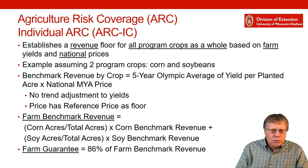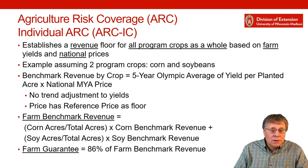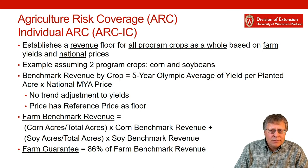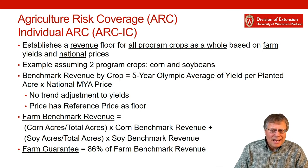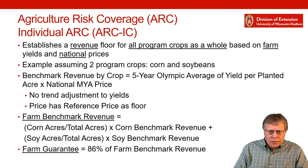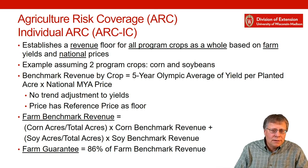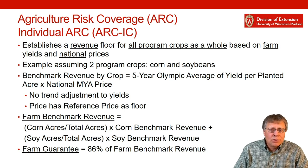To get your farm benchmark, you calculate an individual farm benchmark for each crop. It's the five-year Olympic average of your yields per planted acre times the national marketing year average price. There are no trend adjustments to the yields for you, but the price still has a reference price floor — for corn it'll be $3.70, and for soybeans it'll be $8.40. It's the national price, not your price.